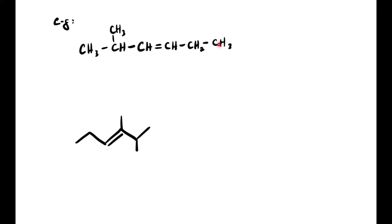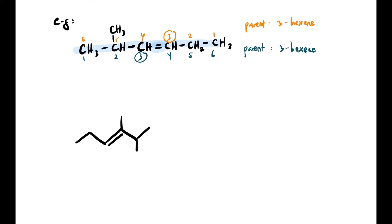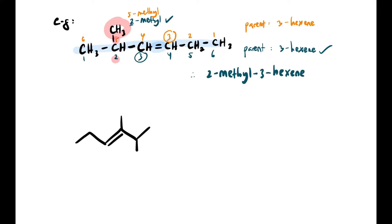Now, let's try this example. Ada 6 carbon ya — the longest carbon chain. Kita nomborkan dia 1, 2, 3, 4, 5, 6 dari satu hujung, dan dari hujung lain pun 1, 2, 3, 4, 5, 6. Kita tengok parent dia — both double bond dekat carbon yang ketiga, so 3-hexene. Either using the orange or the blue one. Kita tengok anak dia sekarang: if you use the orange one, it's going to be 5-methyl. If you use the blue one, it's going to be 2-methyl. Jadi, kita prefer yang 2-methyl — lower locant. Nama lengkap dia 2-methyl-3-hexene.